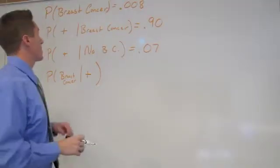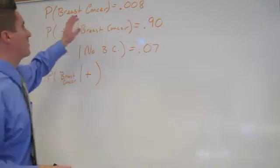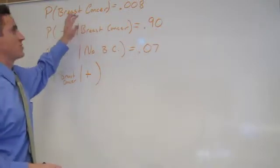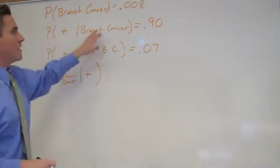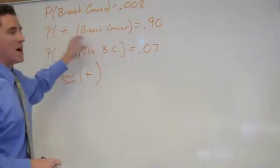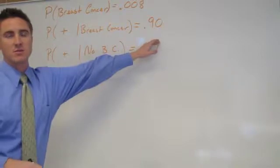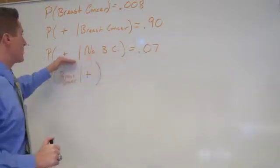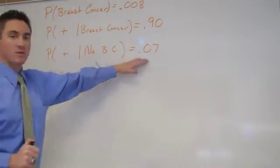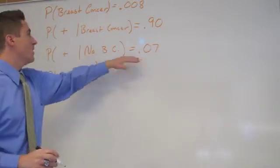We're starting with a problem where the probability that a woman in this age group has breast cancer is 0.008. If a woman has breast cancer, she'll test positive 90% of the time using this test. They also tell us if they don't have breast cancer, they would get a positive 0.07 or 7% of the time, so this would be a false positive.